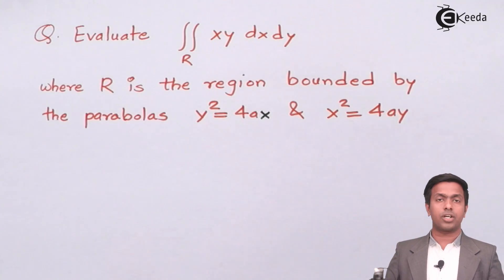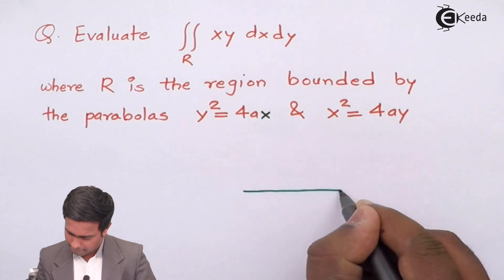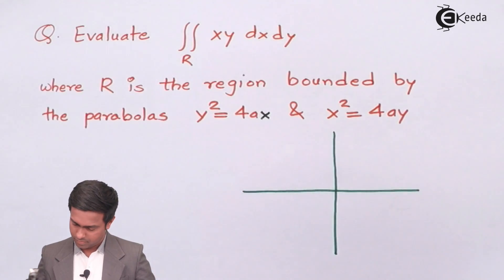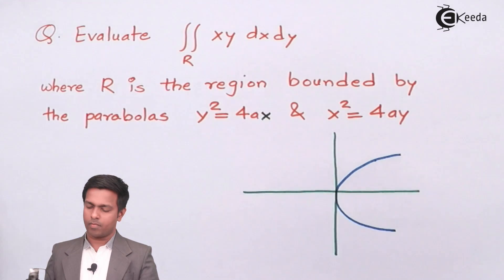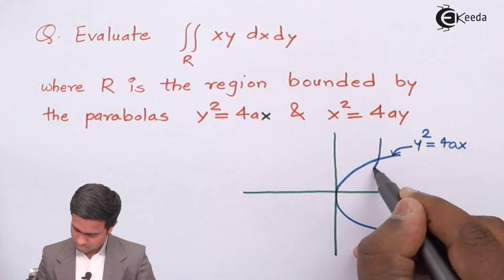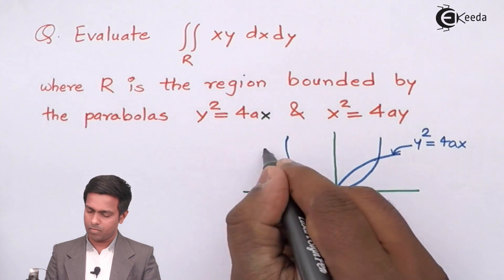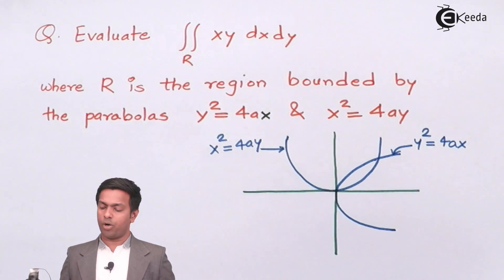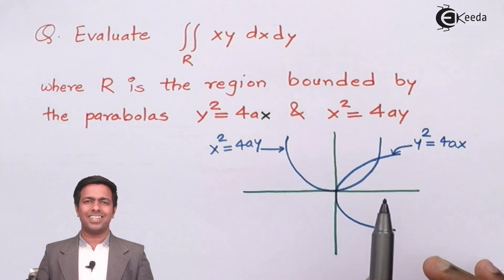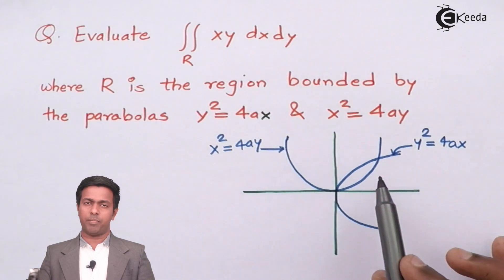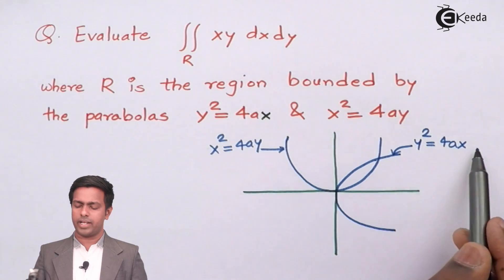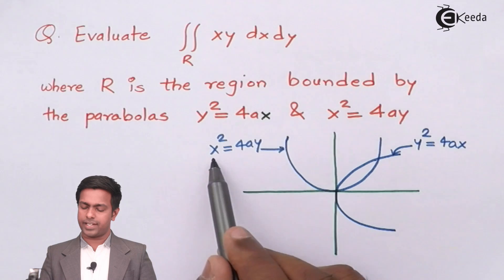Drawing both parabolas, we can identify the bounded region. In the exam, draw these curves as freehand sketches. The boundary on one side is the parabola y² = 4ax, and the other boundary is x² = 4ay.